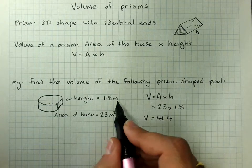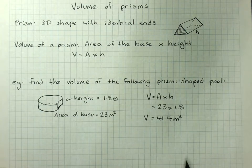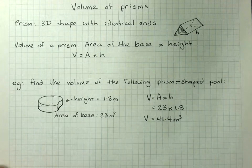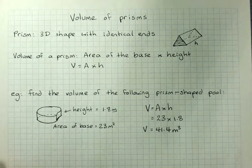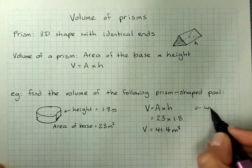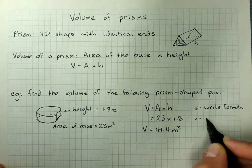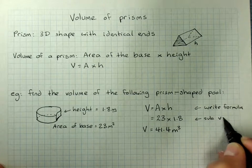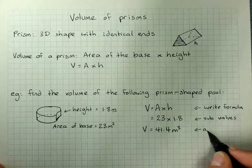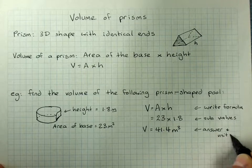And because we were measuring in meters, that's in meters cubed. Because in volume, we're counting how many cubes fit into a thing. So that's the volume of prisms. And our steps there are write the formula, substitute the values of the area and the height, and get the answer with units. And the units will be cubed.